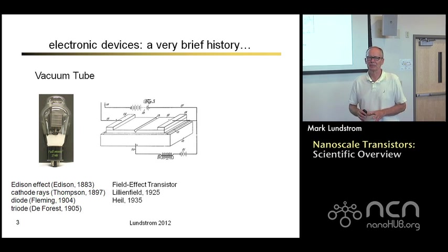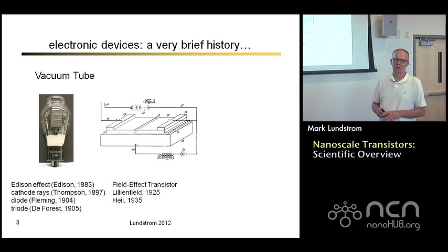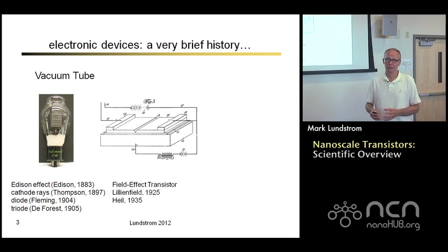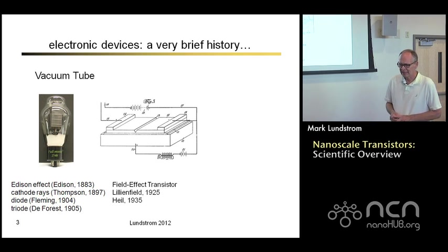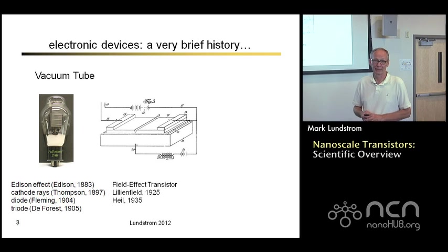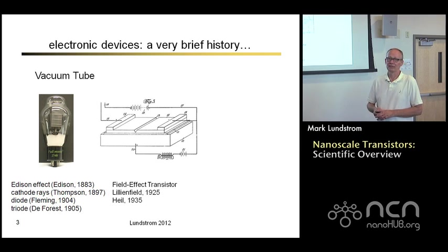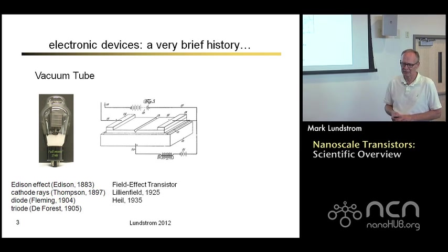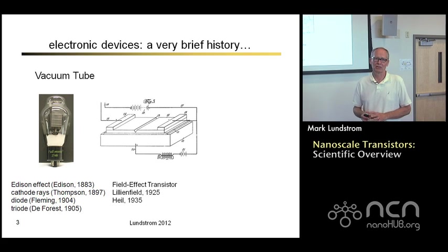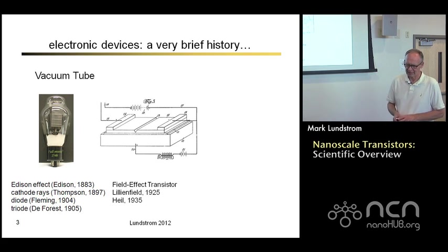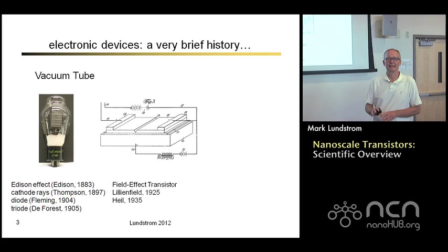But people realized right at the beginning that vacuum tubes had a lot of problems. They consumed a lot of power, they were fragile, they burned out. You couldn't carry your radios around very conveniently. It wasn't very long before people started thinking about new types of devices that would be better. The field effect transistor was actually invented early in the 20th century and patented by two different people, but it turned out to be a very difficult device to build. This is one of the big successes then in the late 1940s.